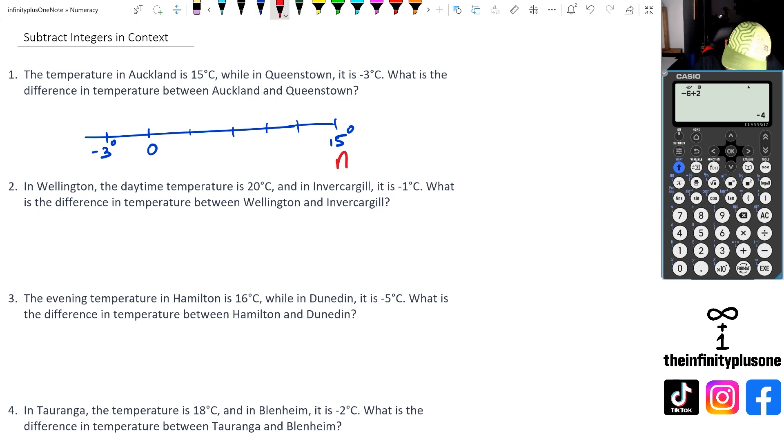Now Auckland happens to be at 15 degrees and then Queenstown happens to be at minus 3 degrees. Now if you look at the difference between those two temperatures, what you should get is you've actually got 15 degrees here, which is highlighted in the yellow part. And then you've got 3 degrees, which is highlighted in the green part. Now I'm looking at 3 as a whole number.